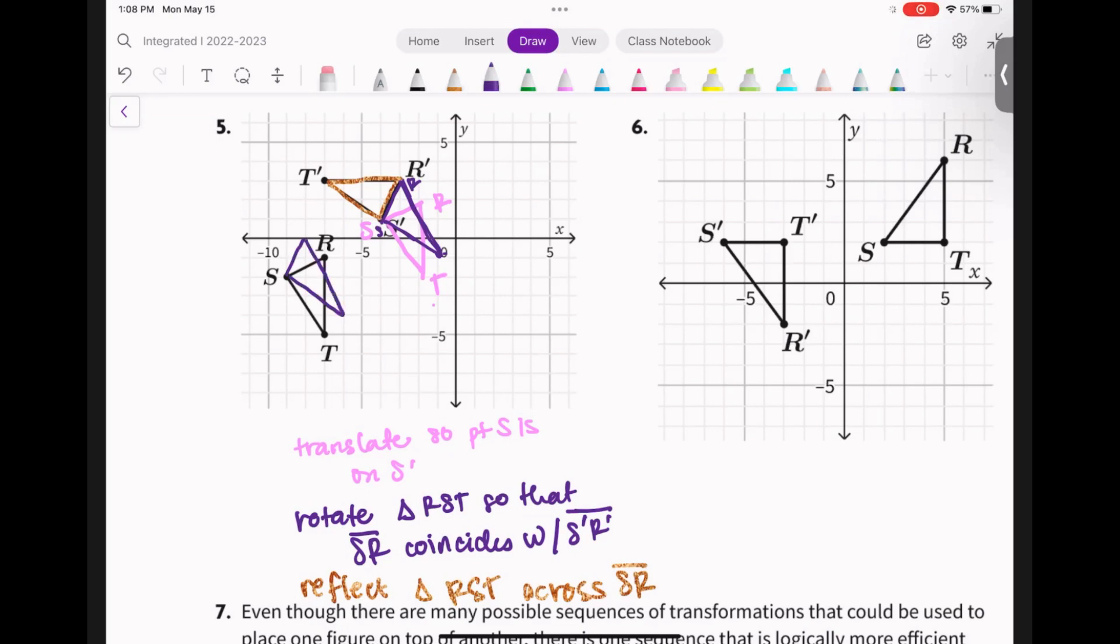So if I did rotate it first, it looks like that, and then I would have translated it, and then I could have reflected it. In general, I like to translate first. I like to get a point on top of another point, then I like to get a rotation so that I get a segment on top of a segment, and then I like a reflection to get the rest of the guys on, if I need a reflection. So any questions on this one?